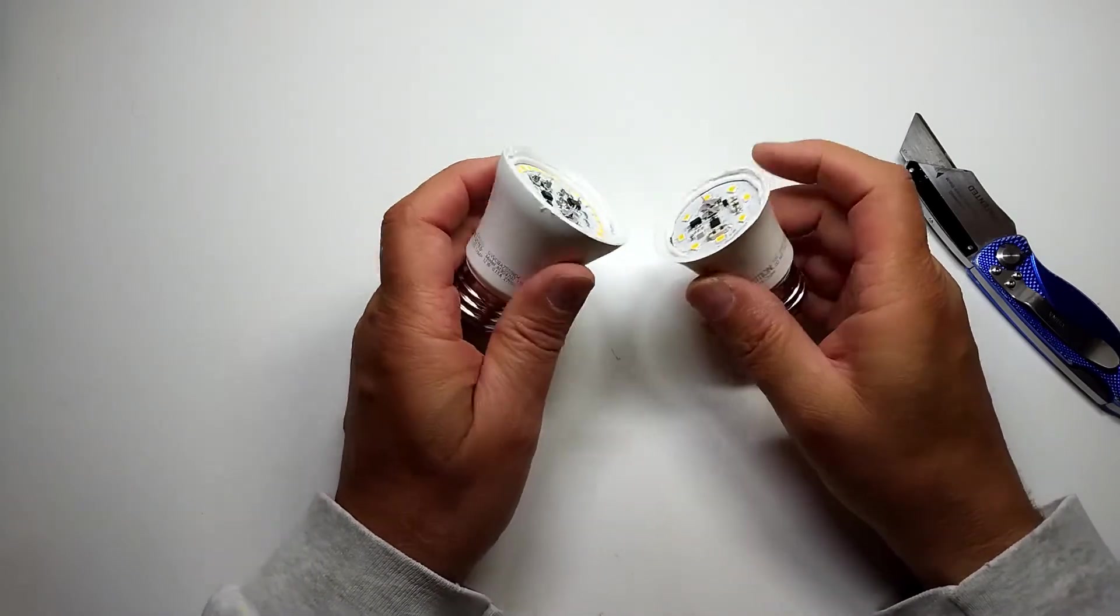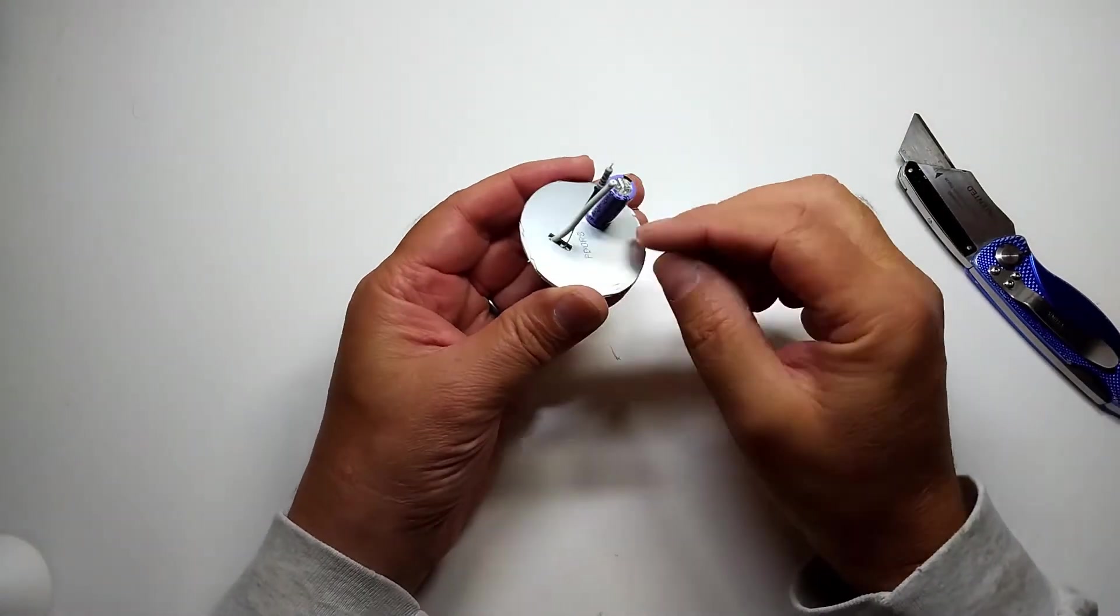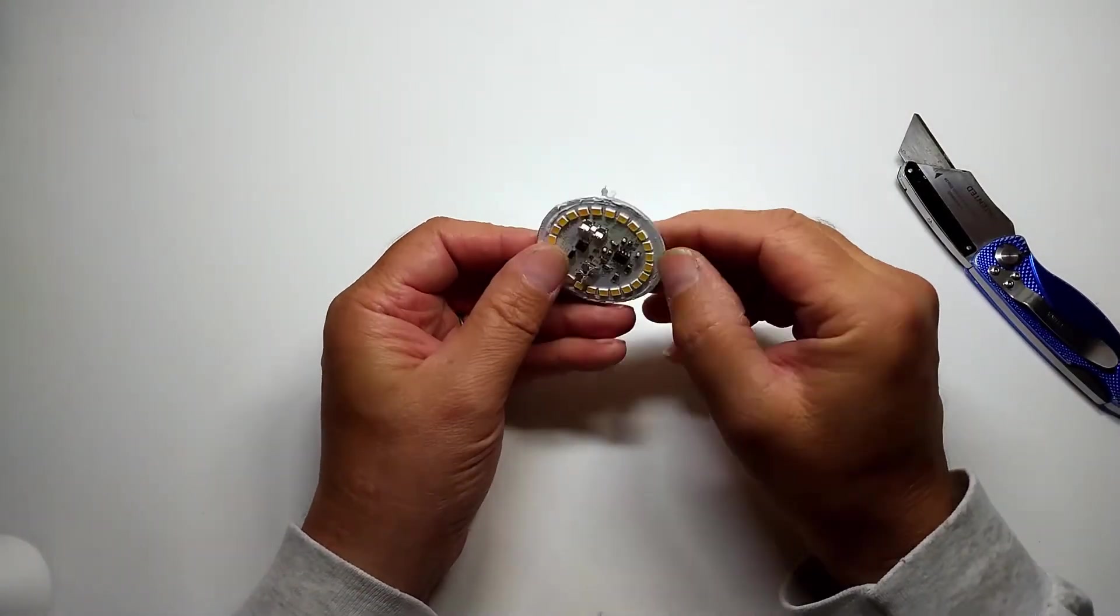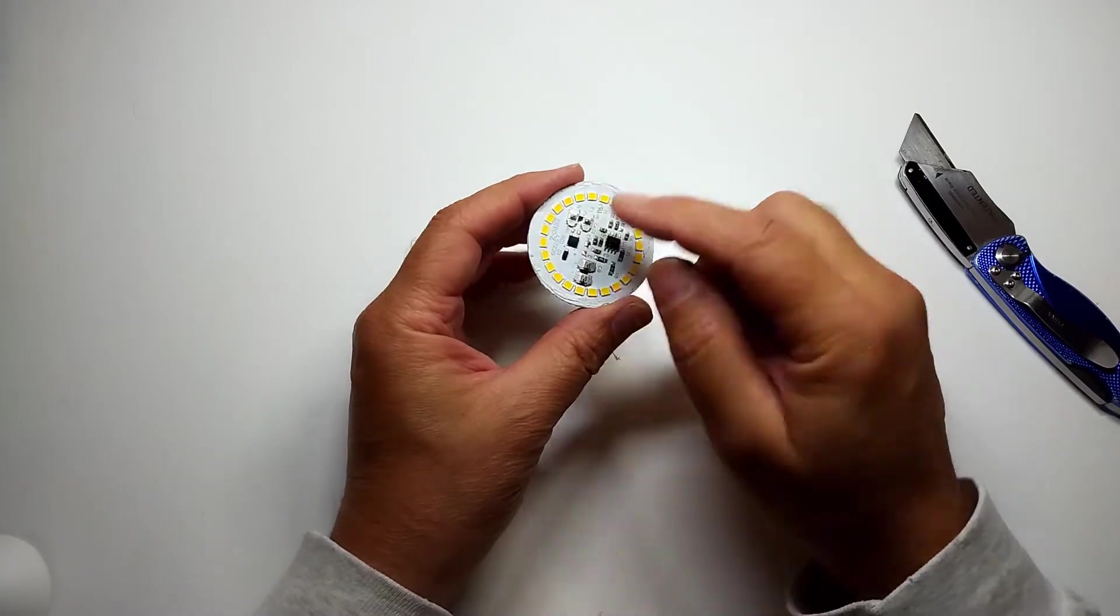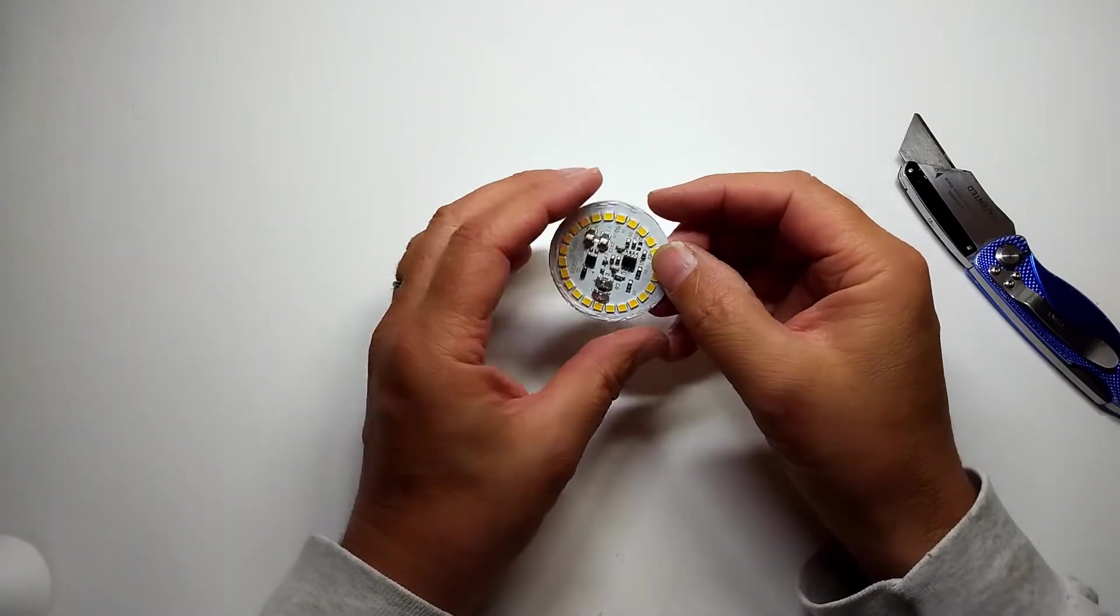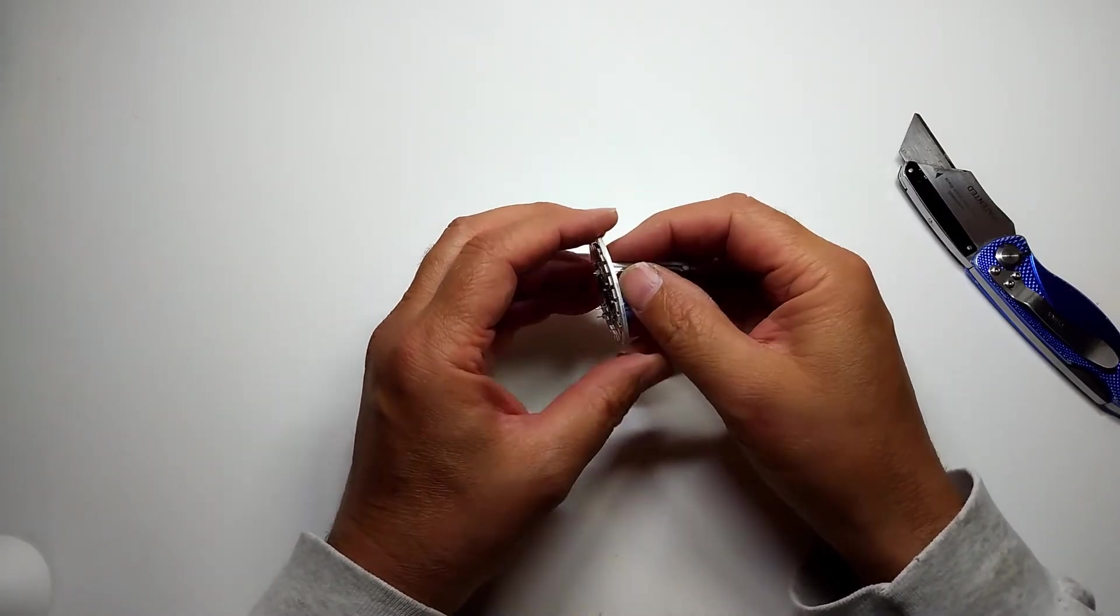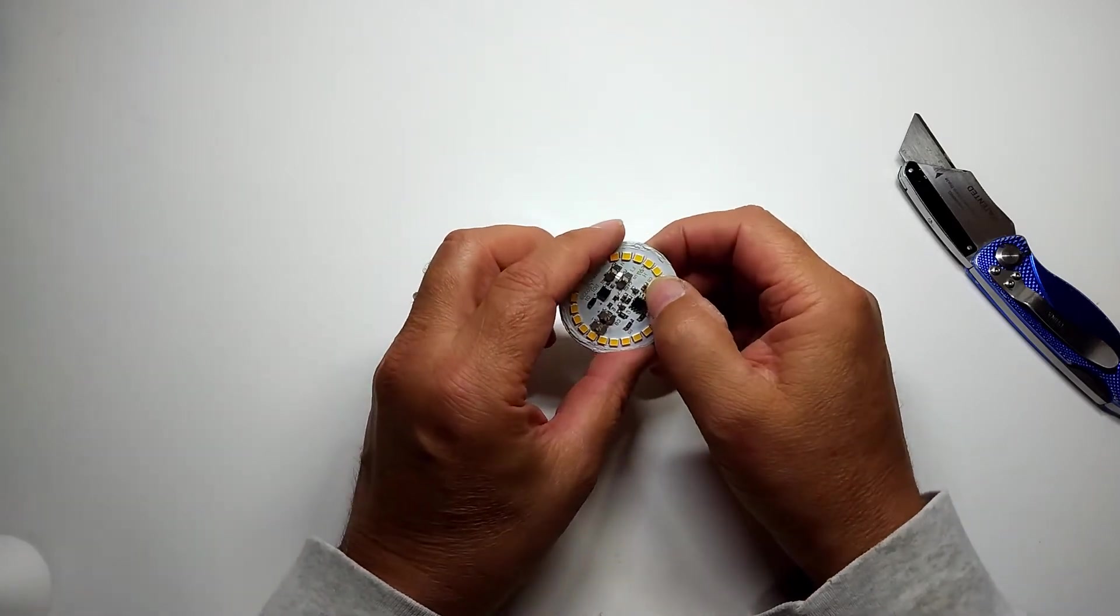The circuit card is etched onto an aluminum plate. If you look on the back, you can see it's just a thick aluminum plate with the circuit board etched on it, and that's to conduct the heat away from the LED bulbs.